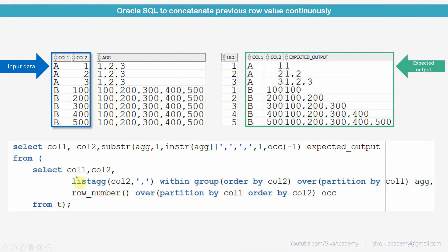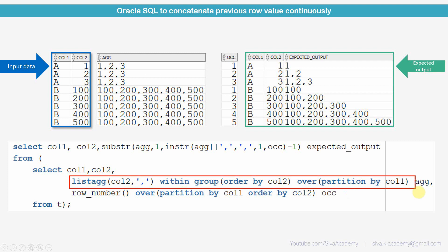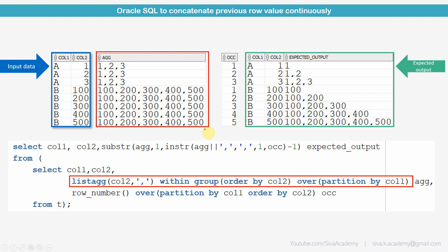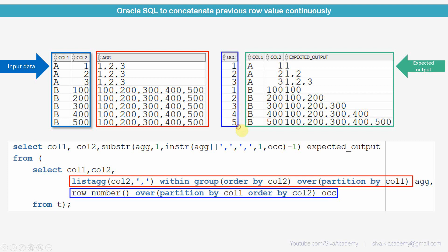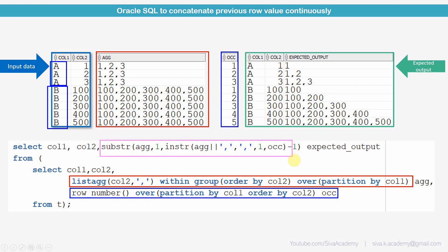Let me give a quick recap of what we have learned. First, list aggregation gives us a comma-separated list of values. Second, the ROW_NUMBER analytical function gives a sequence within each partitioned group — one sequence within A and another within B. Third and last, we used SUBSTR and INSTR to extract the substring based on the row's position.